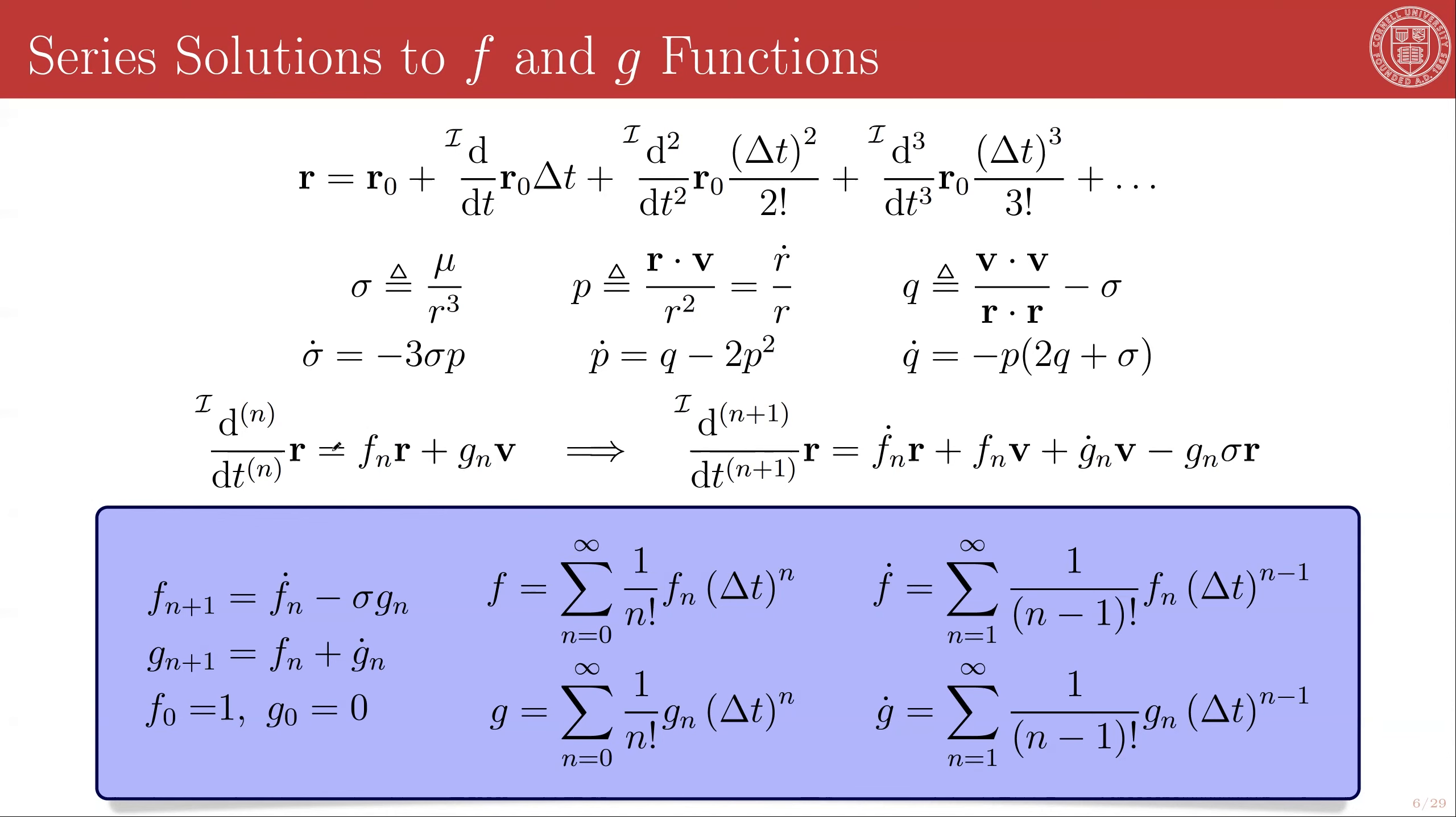can we write any order of derivative of r as some f sub n times r plus some g sub n times v. And that means that if I differentiate this one more time, the nth plus one derivative of r, I will just get the product rule applied to this right-hand side, which looks like f dot n r plus f n v plus g dot n v minus g dot n sigma r. Let's verify this.